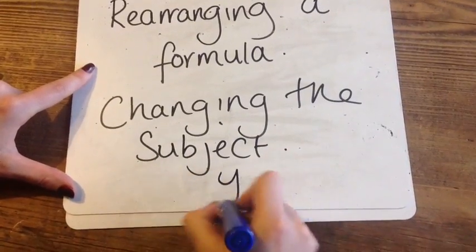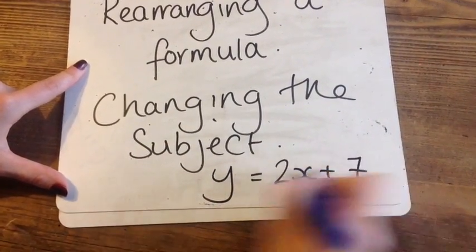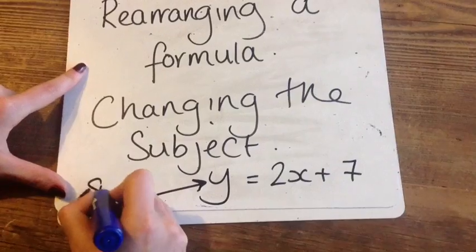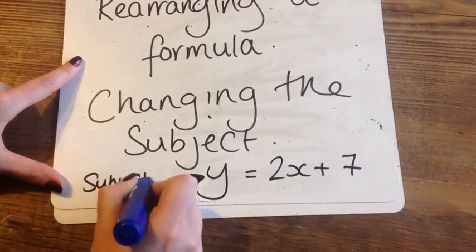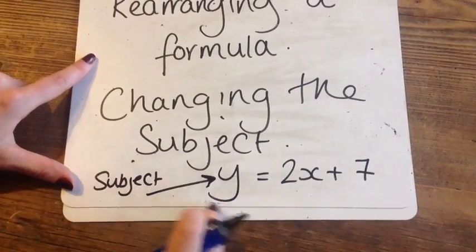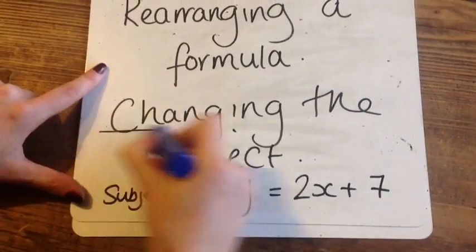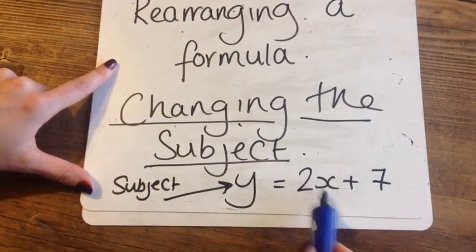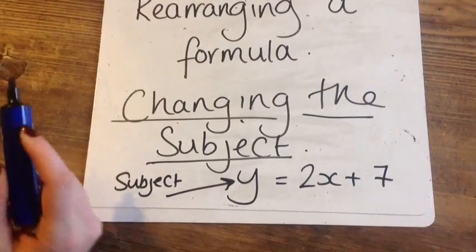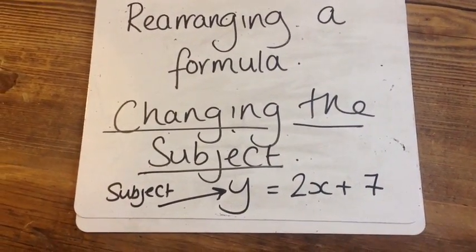For example, Y is the subject of the formula because it's on its own and X has other things around it. Changing the subject means that you are going to make something else be on its own. I'll show you what I mean.